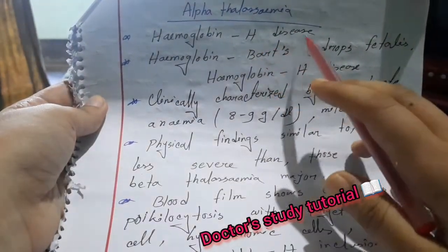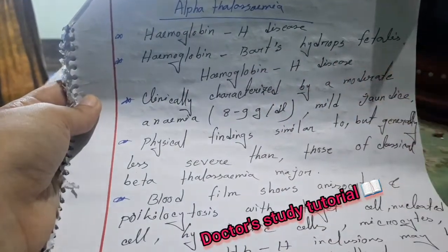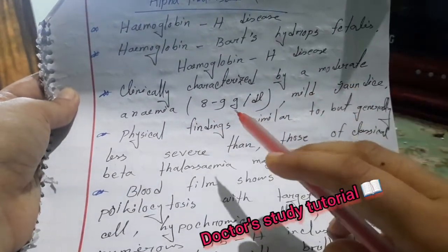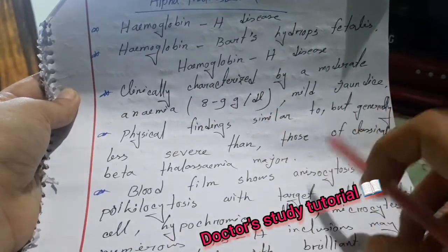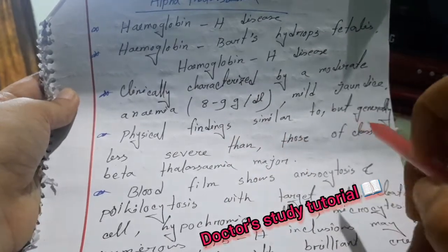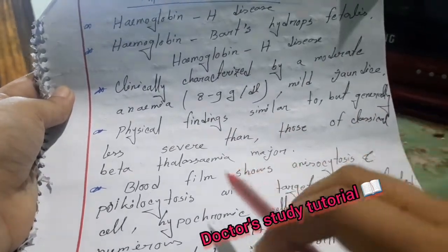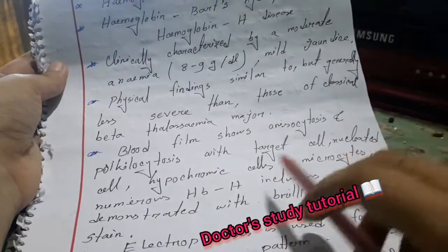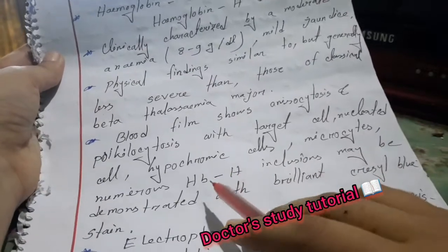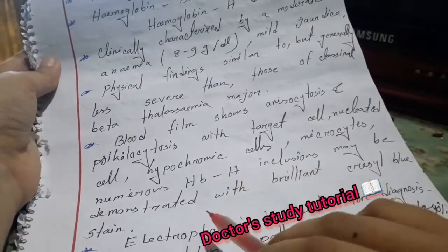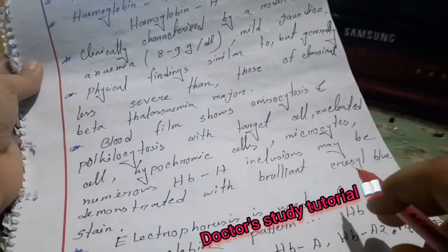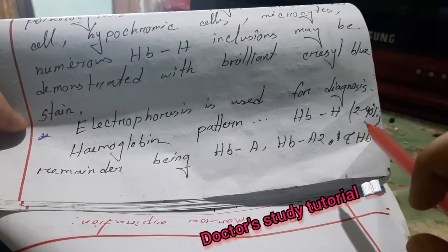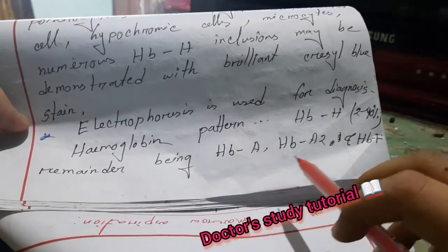Alpha thalassemia includes Hemoglobin H disease and Hemoglobin Bart's (hydrops fetalis). In Hemoglobin H disease, clinical characteristics include moderate anemia (8 to 9 g/dL), mild jaundice, and physical findings similar to but generally less severe than those of classical beta thalassemia major. Blood film shows anisocytosis and poikilocytosis with target cells, nucleated cells, hypochromic cells, and microcytosis. Numerous Hemoglobin H inclusions may be demonstrated with brilliant cresyl blue stain. Electrophoresis is used for diagnosis; the hemoglobin pattern shows Hemoglobin H comprising 2 to 40% of total hemoglobin, the remainder being Hemoglobin A, A2, and F.